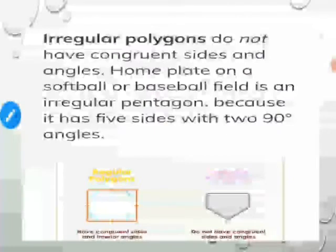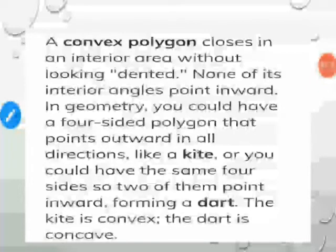An irregular polygon is one which is not regular — its sides are not all equal and its angles are not all equal. For example, a rectangle is equiangular (all angles are 90 degrees) but its sides are not equal, so it is an irregular polygon. Similarly, a rhombus has all sides equal in length but its angles are not equal, so it is also an irregular polygon.